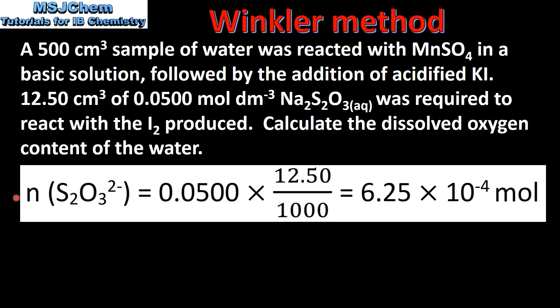So the first thing we need to do is to calculate the amount in moles of thiosulfate ions. Using the equation n equals CV, we multiply the concentration by the volume in decimeters cubed, which gives us 6.25 times 10 to the negative 4 moles of thiosulfate ions.